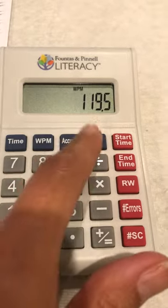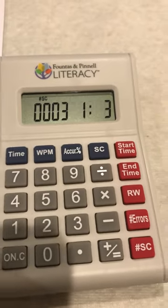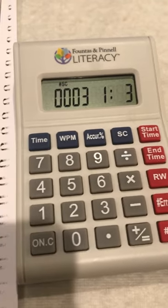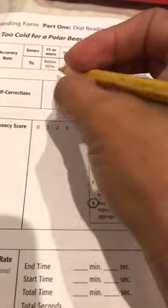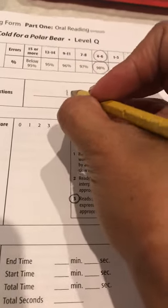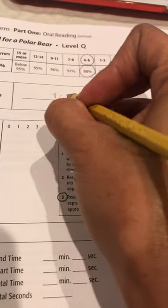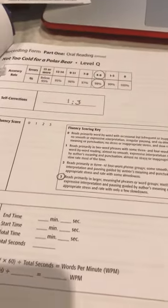And the last thing I can do is find out her self-correction rate, which is 1 to 3. And you can note that on the page as well, where it says right here on the self-correction part. She's making for every one word a 1 to 3 self-correction rate.